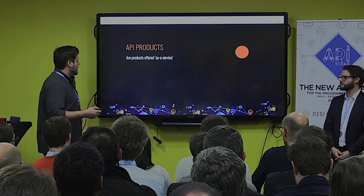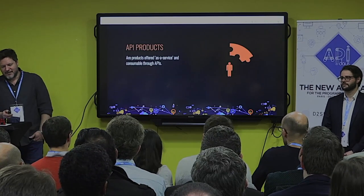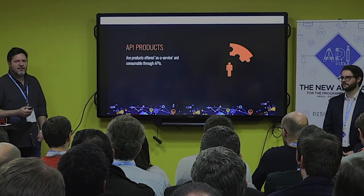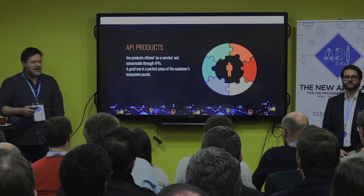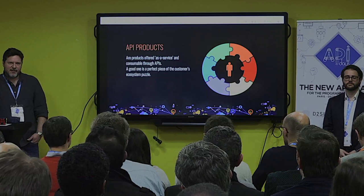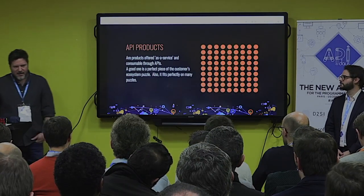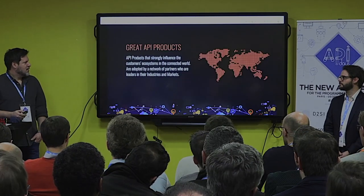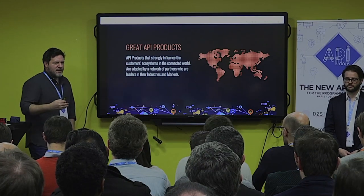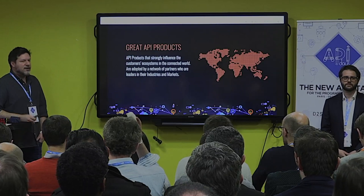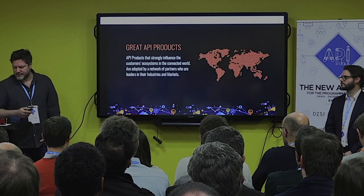An API product is a product because it's offered as a service and consumable through APIs — that's the definition we use at Swisscom and in the book. What makes a good API product? It fits perfectly in the customer ecosystem — it's a perfect piece of the puzzle of the customer experience — and even better, it fits in many ecosystems. What makes an API product a great API product is the capacity to strongly influence the decision-making of the customer, often by being adopted by a large network of partners that are leaders in their market.